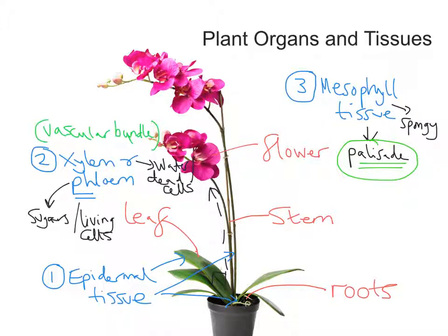So there we have a little bit about plant organs and plant tissues. Our big organs: the flower, technically classed as an organ system; the leaf, stem, and roots. And then we've got specific tissues to mention: the epidermal tissue, the xylem and phloem tissue — which together form the vascular bundle — and the mesophyll tissue, made of the spongy and palisade cells. Hope all that helps.